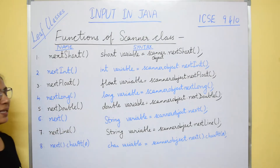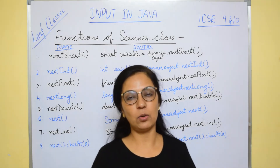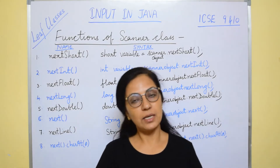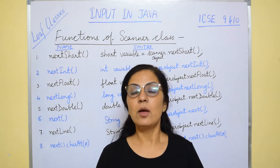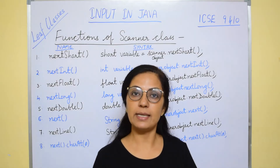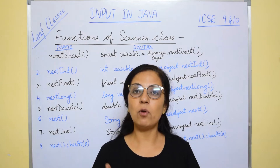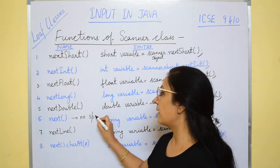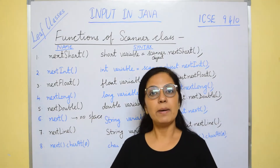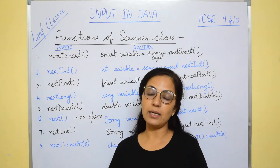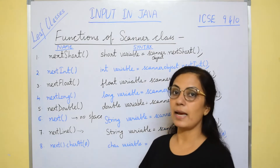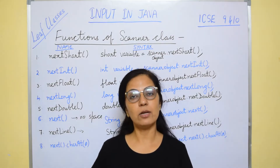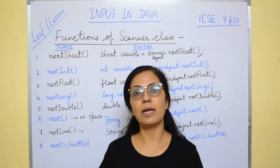Then we have two functions: next() and nextLine(). Both are used for entering String type values. You may ask why two functions for String when other data types have only one. When we input a String, we can have spaces too — if I want to input a sentence, there will be spaces. If I want to enter just one word, space is not required. So when no space is involved, we can use next(). But when the string may contain spaces, we always go with nextLine(). nextLine() can be used with or without spaces, but next() is used only when space is not allowed in the input.